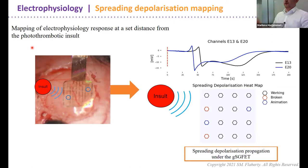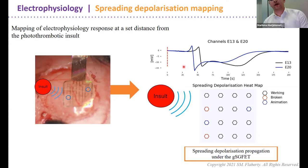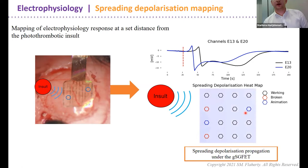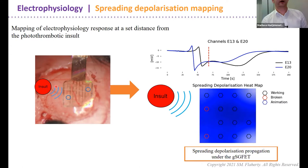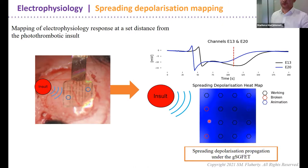Now I'll play a video showing the array on the brain mapping spreading depolarizations. The infarct was induced here, and the spreading depolarization will come from the infarct across the array. You'll see hyperpolarization depicted by red, and then depolarization depicted by blue, propagating across the array surface. These two traces are from specific channels, and you can see the depolarization come across the array — which corresponds to what's actually happening in real life with the depolarization propagating underneath the array.